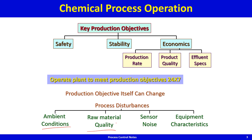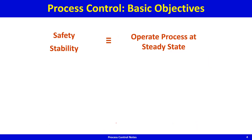Despite all these disturbances, you still want to operate the process safely, stably, and economically. Why do we need a control system? It is required for stabilization — safety and stability — that is, steady operation. In any chemical engineering course, you write the material balance and energy balance, assume steady state so the rate of accumulation is zero, and get algebraic equations that you solve simultaneously to get the steady state solution.